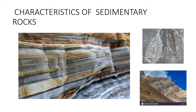Sedimentary rocks are formed from materials derived from other rocks. They are also referred to as secondary rocks because they are derived by the deposition of sediments of other pre-existing primary or parent rocks. The igneous rocks are called the parent rocks because they were the first to be formed. From the weathering, erosion, and deposition of the sediments of the igneous rocks, the sedimentary rocks were formed. That is why they are referred to as secondary rocks.